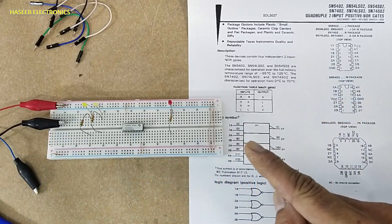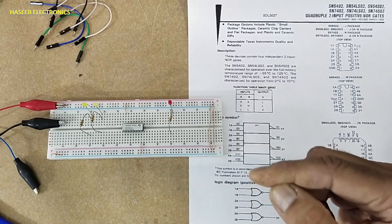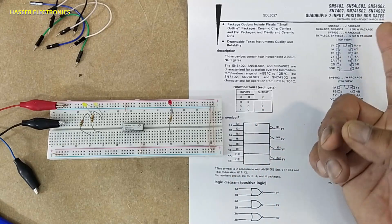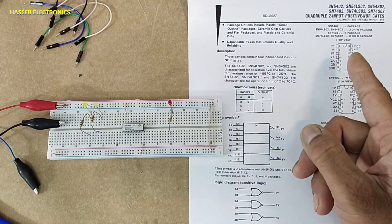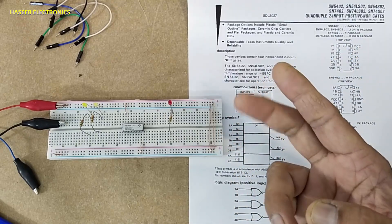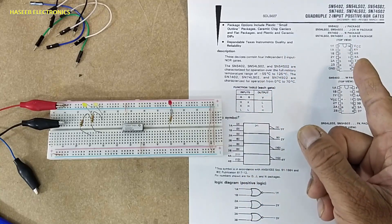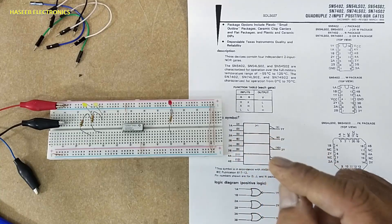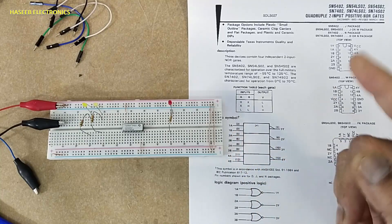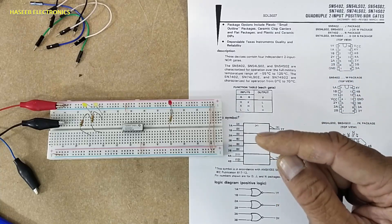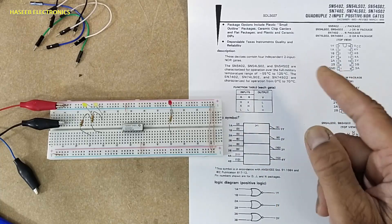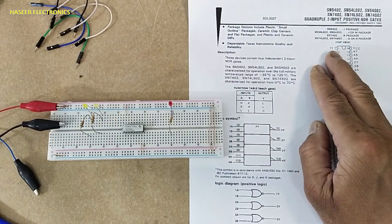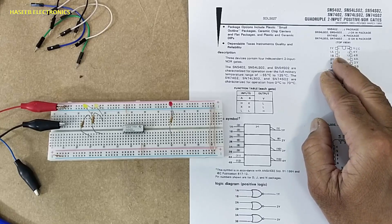This 7402 provides the opposite function to OR gate. If all inputs are low, it will provide high output. Anyone or all inputs are high, the output will low.